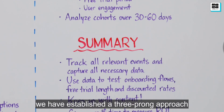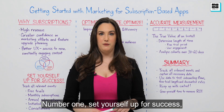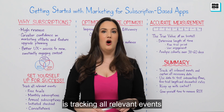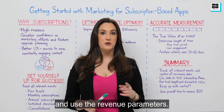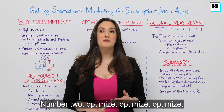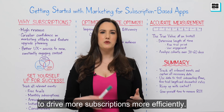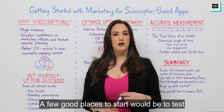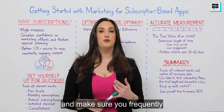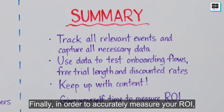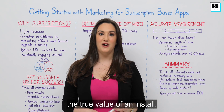To sum up, we have established a three-prong approach to building a successful UA strategy for a subscription app. Number one: set yourself up for success — make sure your MMP is tracking all relevant events, capturing all your data, and that you break out your different subscription types and use the revenue parameters. Number two: optimize, optimize, optimize — test different onboarding flows, play around with your free trial period, experiment with discounts, and frequently update your content. Finally, in order to accurately measure your ROI, you first have to determine the length of time it takes to see the true value of an install.